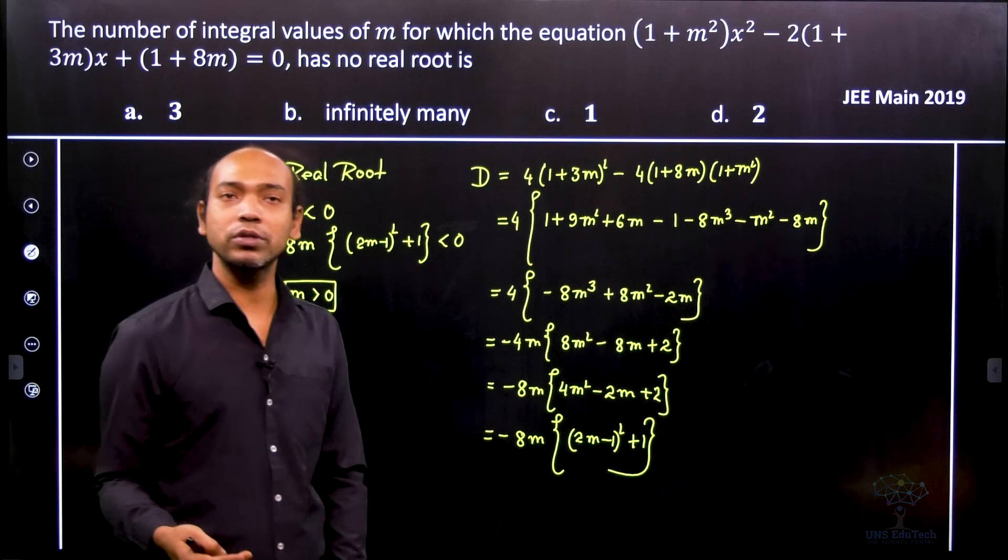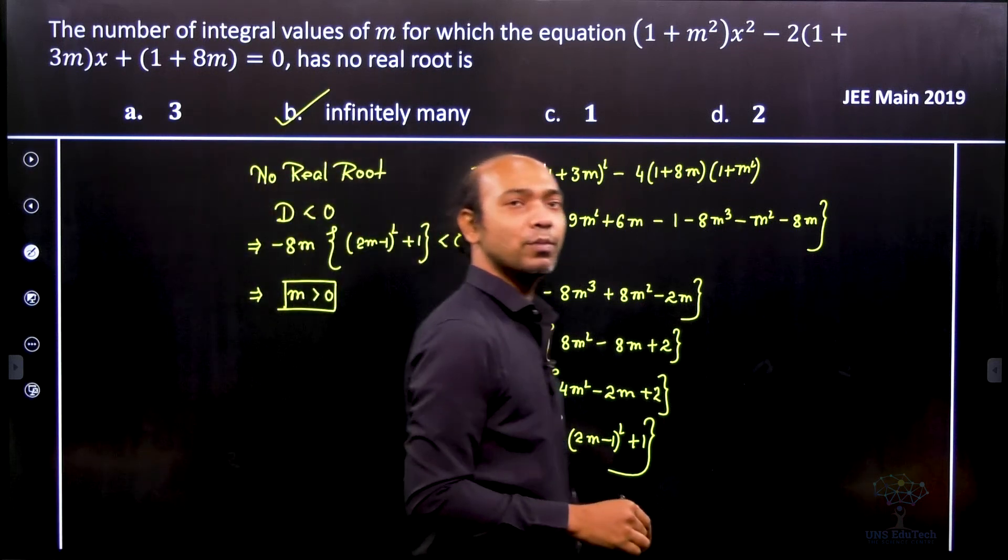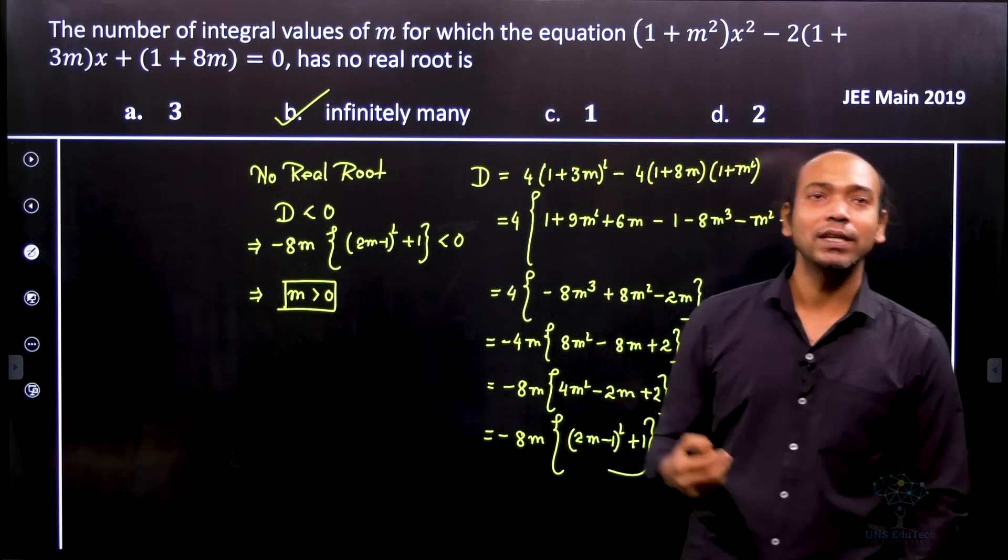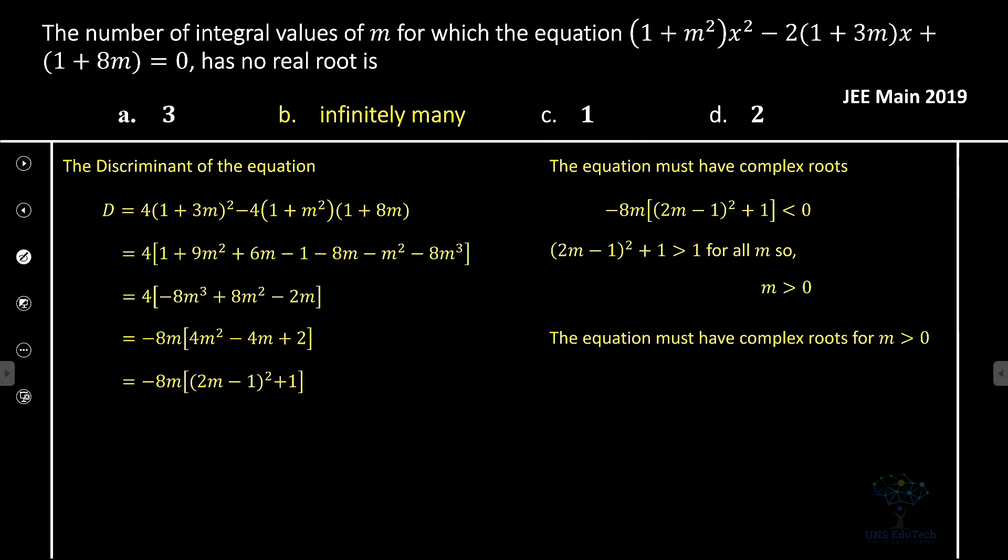So how many m greater than 0 is possible? Obviously it's an infinite number of times. So that's why for this particular problem, the right option is infinitely many m is possible so that we will have no real roots. Hope you understood the problem. Thank you.